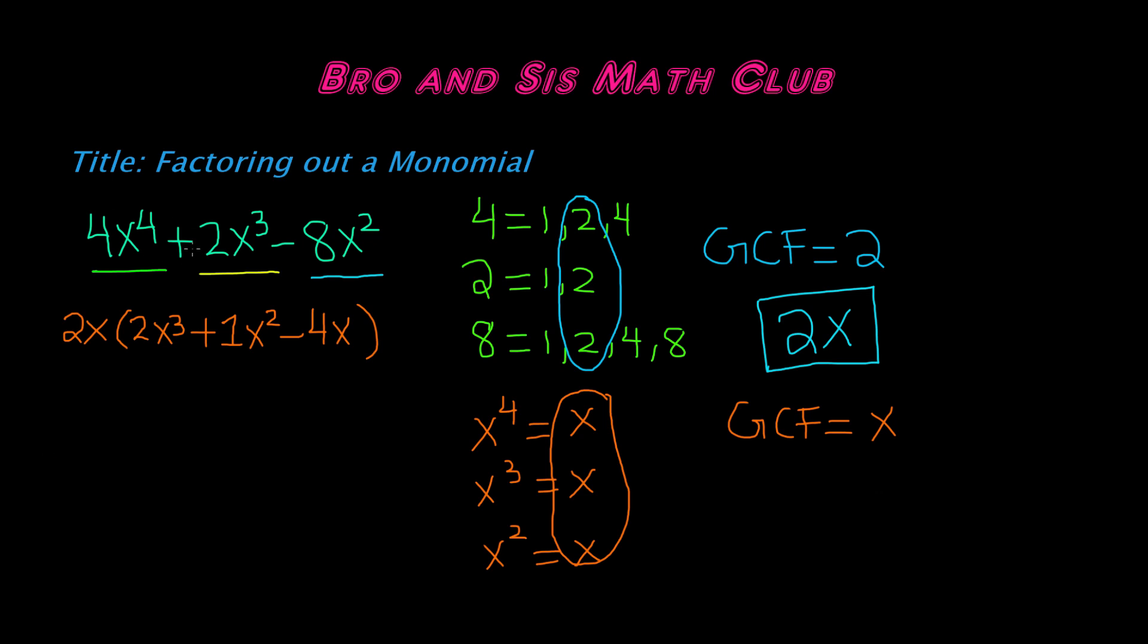we factored out each monomial and we found the GCF of our polynomial and then we divided each monomial to find the entire factored form of this polynomial. So if you work your way step by step, this is actually a very, really easy topic.